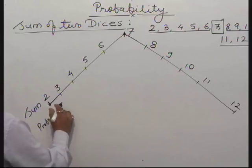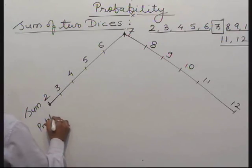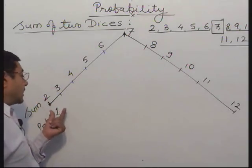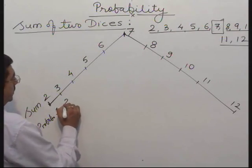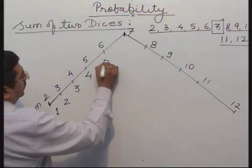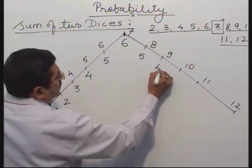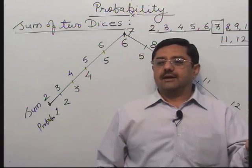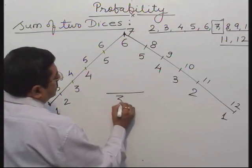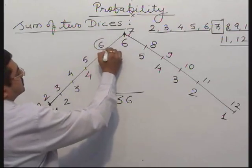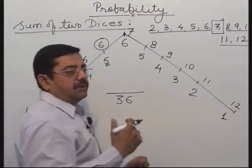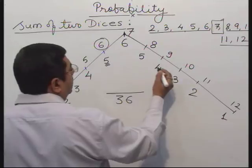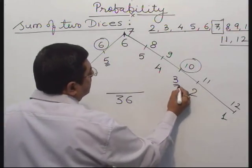What is the probability? For each sum, you simply read from the triangle. There is only 1 case of getting sum 2, so probability is 1 by 36. If it is asked what is the probability of getting sum 6, simply the answer is 5 by 36. I have explained this with the sample space. What is the probability of getting sum 10? The answer is 3 by 36.